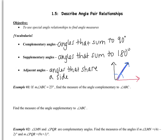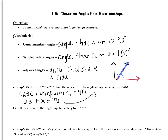Now we're going to do two examples. Example one: the measure of angle ABC is 23 degrees. Find the measure of the angle complementary to angle ABC. Complementary angles add to be 90. So if I take ABC and add its complement, which is what I'm looking for, I should get 90 degrees. ABC is 23, and I'll call the complement X. Those should add to be 90. Subtracting 23, I get X to be 67 degrees. So the angle complementary to ABC is 67 degrees.